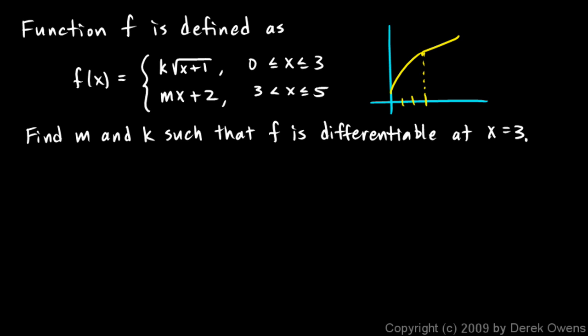Now in order to be differentiable, first it has to be continuous. This function has to go through this point without a break or a gap right there, and then second of all it has to be smooth. As we get close to 3 on the x-axis, the slope on the left side has to equal the slope on the right side. Those slopes have to be the same right at that point in order for it to be smooth.